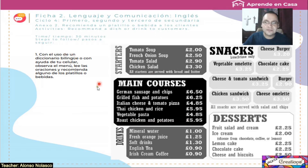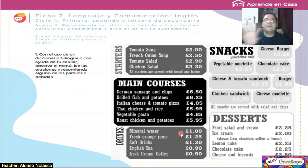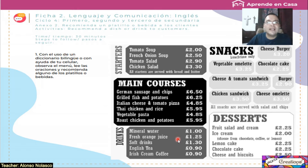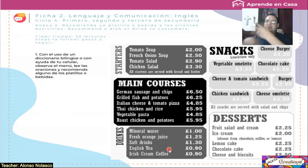Excellent. Now drinks — bebidas. Mineral water: one pound. Fresh orange juice — el jugo de naranja fresca: one twenty-five pounds. Soft drinks: one thirty pounds. English tea: ninety cents — aquí sí vamos a hablar de centavos de los pounds. And Irish cream coffee: the same cost, el mismo costo.